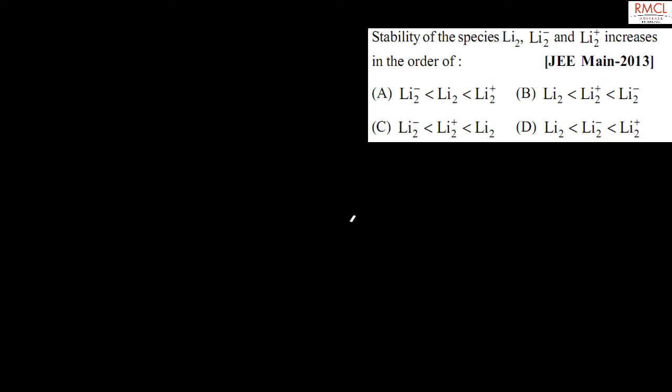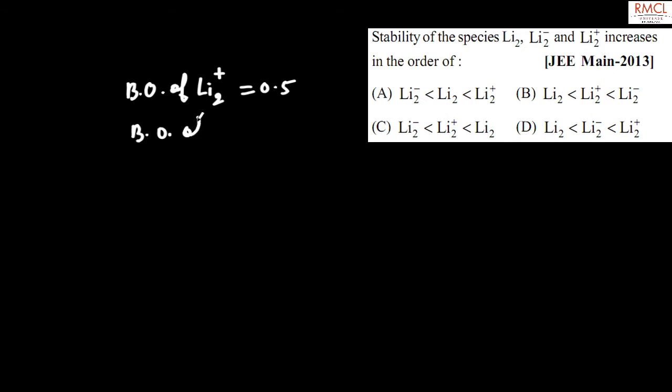The given question, asked in JIM in 2013, is about the stability of the species Li2, Li2 minus, and Li2 plus. We calculate the bond order: bond order of Li2 plus is 0.5, and bond order of Li2 minus is 0.5.